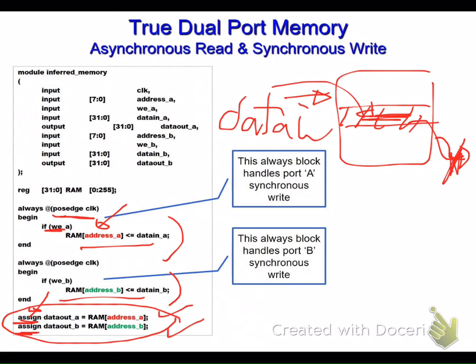Since the reading of data output is not inside an always block, it does not need to be defined as a register. In the synchronous case the data output is defined as a register, but here it is defined only as output — not a register — because it is not inside an always block.